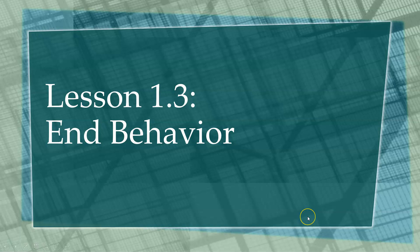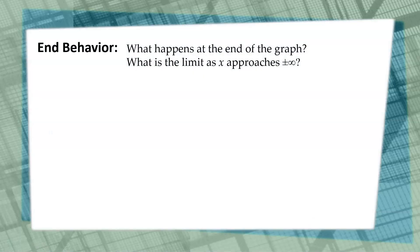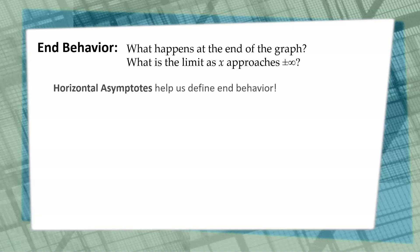What is end behavior? End behavior — what you need to do is ask yourself this first question: what's happening at the end of the graph? Or, what is the limit as x approaches positive infinity and negative infinity? We'll be looking at what those two questions refer to in just a second. But to help us out, if we can identify a horizontal asymptote, it'll help us identify what the end behavior of the graph is going to be. Looking at graphs in just a minute is going to make a lot more sense of this.